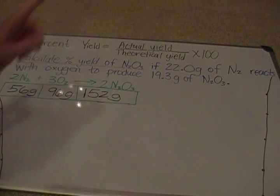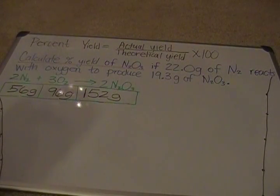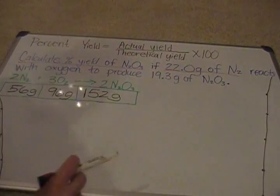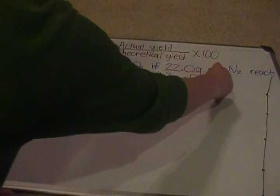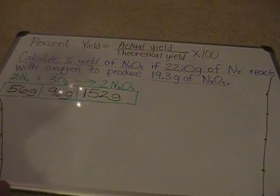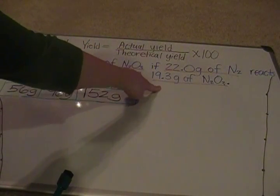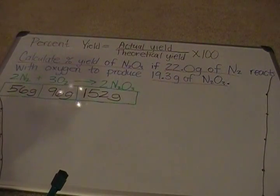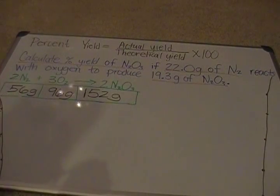So I need to do a calculation to find the theoretical amount of N2O3. Reading the problem: 22.0 grams of N2 is one piece of given information, and 19.3 grams of N2O3 is another. However, the 19.3 grams is the actual yield — it won't help me find the theoretical yield — so I won't start my calculation with that value. Instead, I'll start with the 22.0 grams of N2, because if I know how much N2 I had, I can figure out how much N2O3 I should be able to produce using stoichiometric calculations.